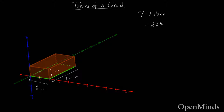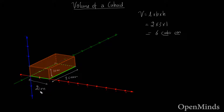So the volume is two times three times one, which is six. Now the question is: six what? The unit of volume is cubic centimeters. If the measurements are in meters, we call it cubic meters; in feet, cubic feet. Since we have centimeters here, the answer is six cubic centimeters, or six cc.